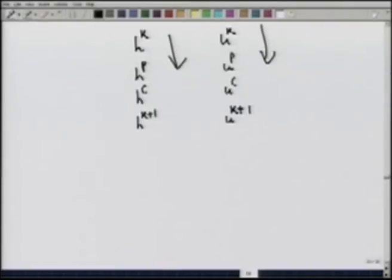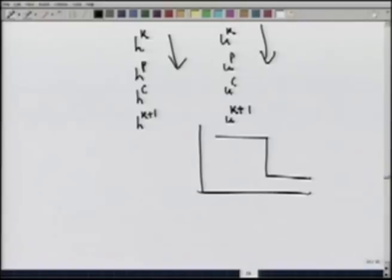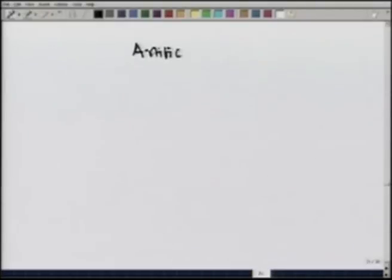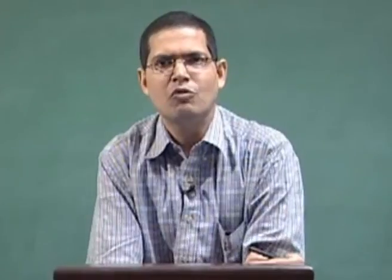The MacCormack scheme is not completely free from numerical error either — we find oscillations near shocks. To address this, something called artificial viscosity is used to kill the numerical oscillations. By using artificial viscosity with the MacCormack scheme, one can capture shocks very well.